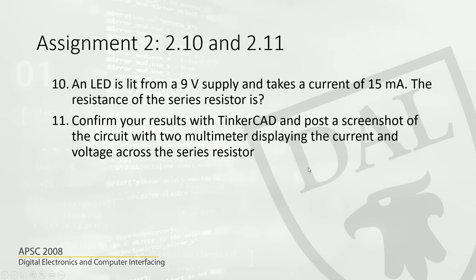If two volts is dropped across the LED, the rest is going to drop across the series resistor. You can add a meter to measure current — it doesn't matter where because this is just a series circuit, so everywhere the current is going to be the same. And if you put a meter across the series resistor, you would be able to measure the voltage. Just take a screenshot and attach it to the assignment.